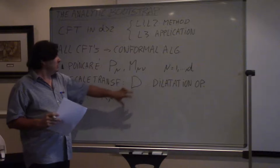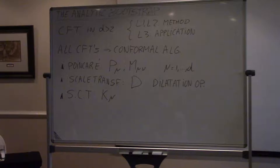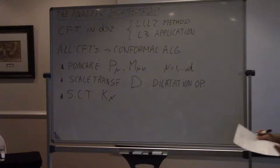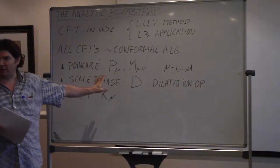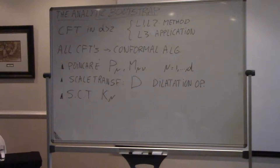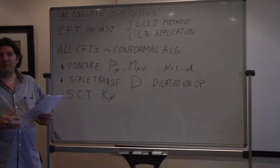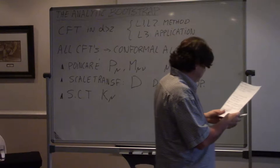And then, in addition, there is a very weird set of transformations called special conformal transformations, given by K_mu. All these generators generate what we call the conformal algebra. Of course, whenever you consider a specific theory, it may have additional global symmetries. However, I want to keep the discussion general and use only this structure. So what I am going to say for the next two lectures will be valid for any conformal field theory in dimensions higher than 2.